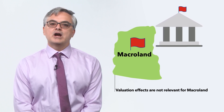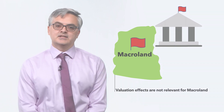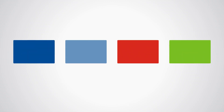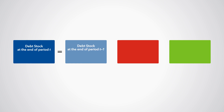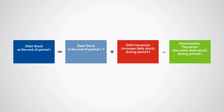To carry on this task, you can consider that the debt level at the end of a period T is equal to the debt level at the end of the previous period T-1, plus debt issuances minus the debt amortizations that occur during period T.